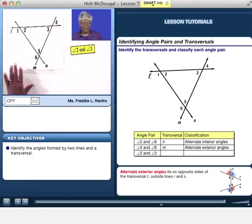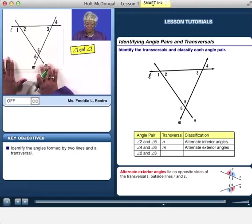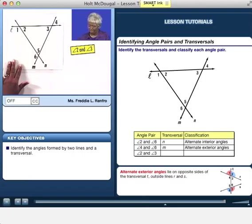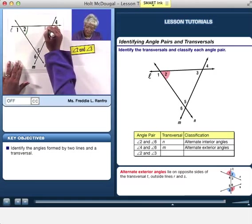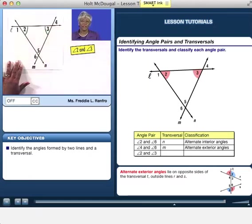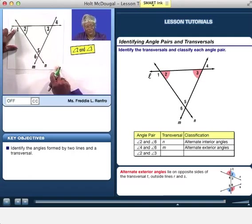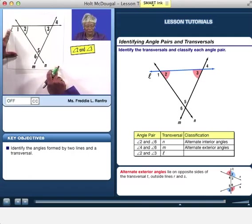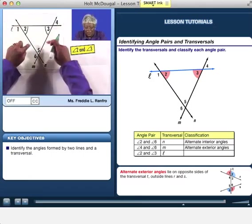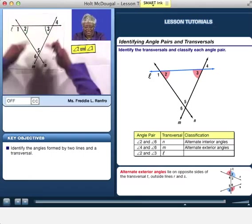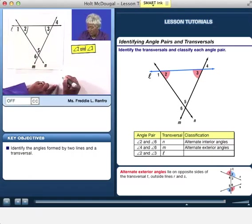Let's look at angles 2 and 3. Angle 2 is here. Angle 3 is right here. Well, where's the transversal? The transversal is L. See the transversal coming in and cutting these two lines? So the transversal is L.